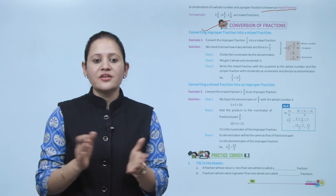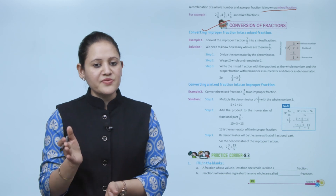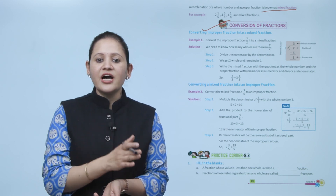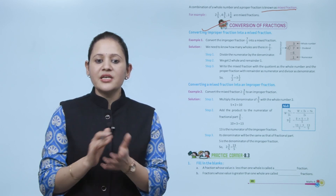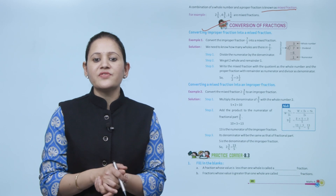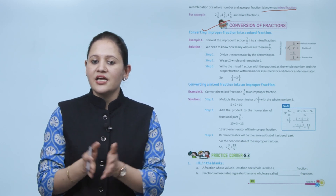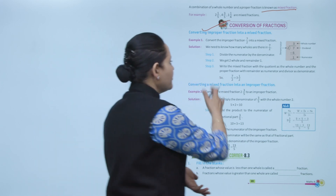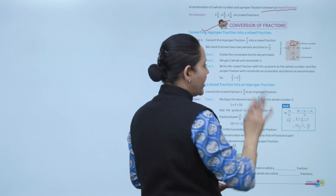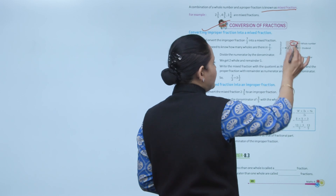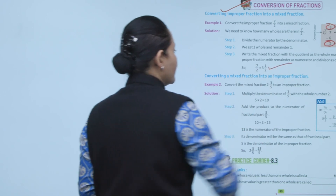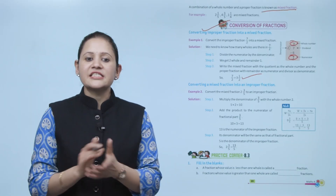Converting improper fractions into mixed fractions: convert 7 by 2 into a mixed fraction. Divide the numerator by the denominator — 7 divided by 2 gives quotient 3 and remainder 1. Write the mixed fraction with the quotient as the whole number, the remainder as the numerator, and the divisor as the denominator. So 7 by 2 equals 3 and 1 by 2.